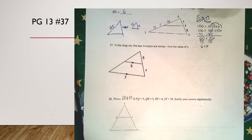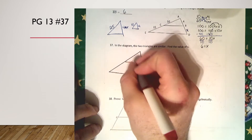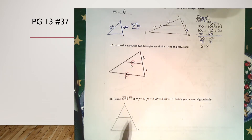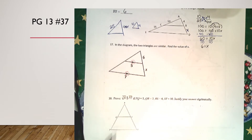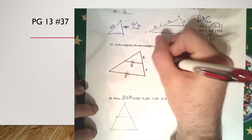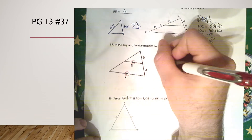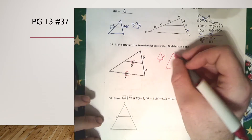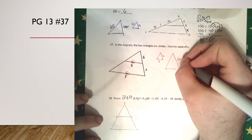Next is number 37. It says the two triangles are similar — find the value of x. I notice the parallel line symbols here. I'll draw a small triangle and a big triangle. The bottom of the small one is 5 and the right side is 6. For the big triangle, the full right side is 6 plus x, and the bottom is 7.